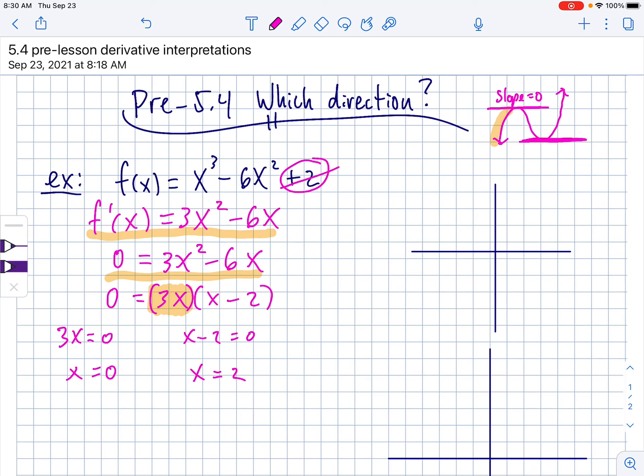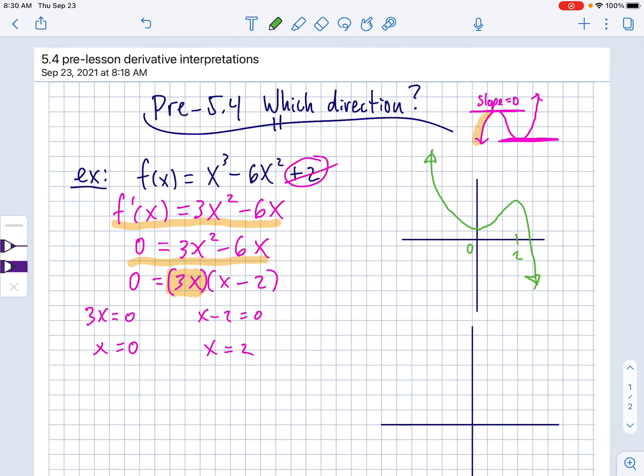Now, what that means in terms of a graph is that it flattens out, the tangents flatten out at those spots. Now, the problem is when it comes to sketching a graph, I'm not sure if that means it was coming downhill, like this, and then at 0 it flattens out and then goes uphill, and then at 2 it turns around and goes this way. I'm not using the actual blocks, I'm just, imagine that 2 is right here. So, this is 0.